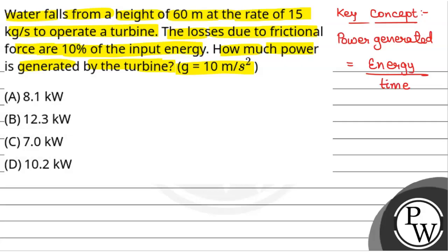Now, we will see that water is falling from a height of 60 meters. H equals 60 meters at the rate of 15 kg per second. So if we take T equals 1 second, mass will be equal to 15 kg in 1 second. 15 kg of water will fall on the turbine.